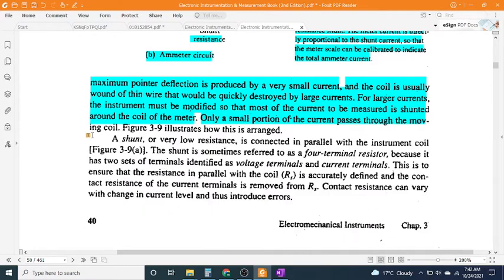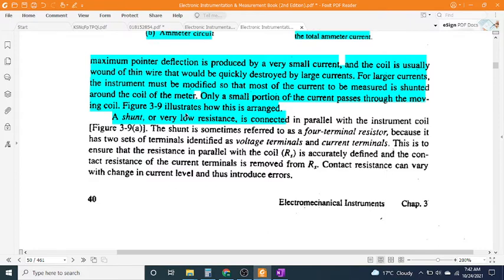Figure 3-9 illustrates how this is arranged. A shunt, or very low resistance, is connected in parallel with the instrument coil. The shunt is sometimes referred to as a four-terminal resistor.